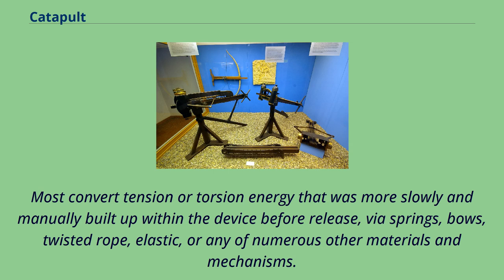Most catapults convert tension or torsion energy that was more slowly and manually built up within the device before release, via springs, bows, twisted rope, elastic, or any of numerous other materials and mechanisms.